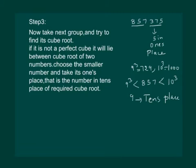Hence, our required cube root will be 5 in the 1's place and 9 in the 10's place. And we can write that cube root of 857,375 is equal to 95.